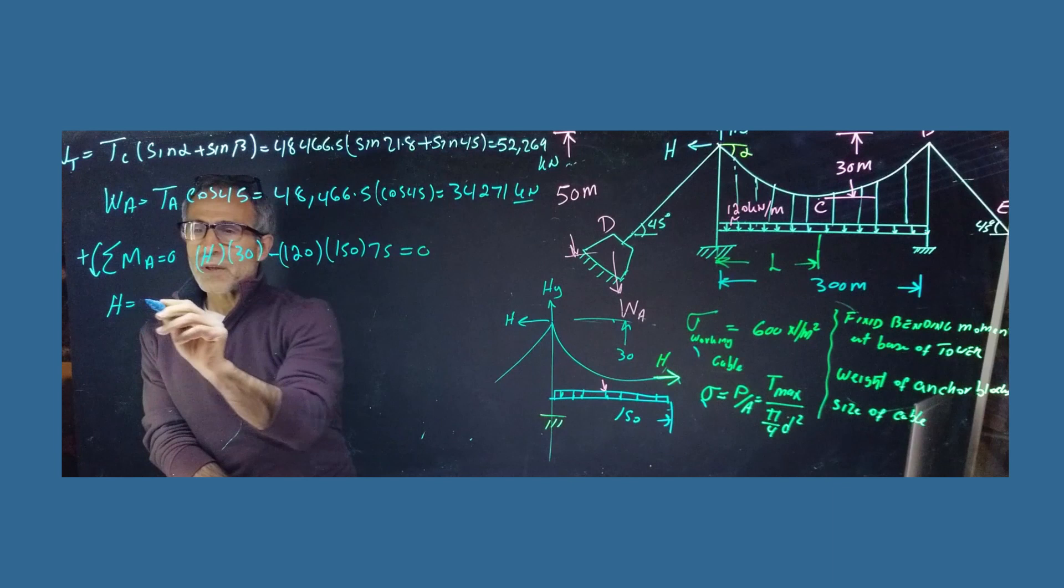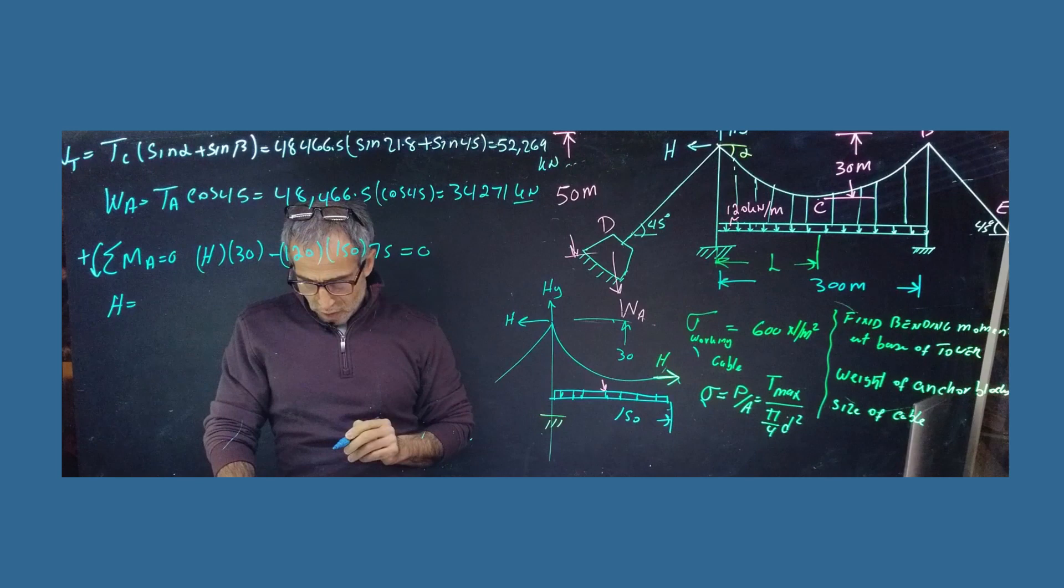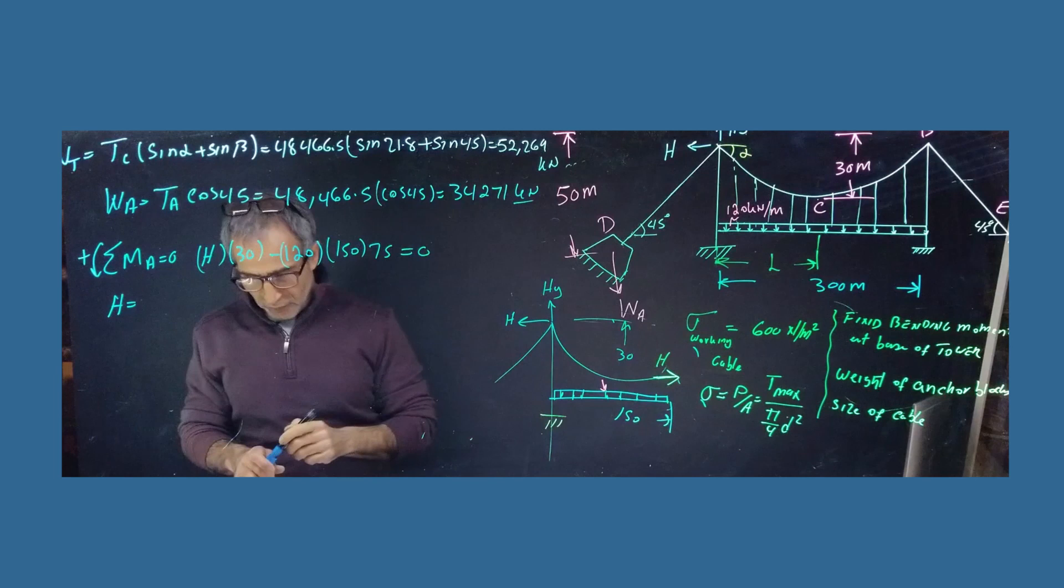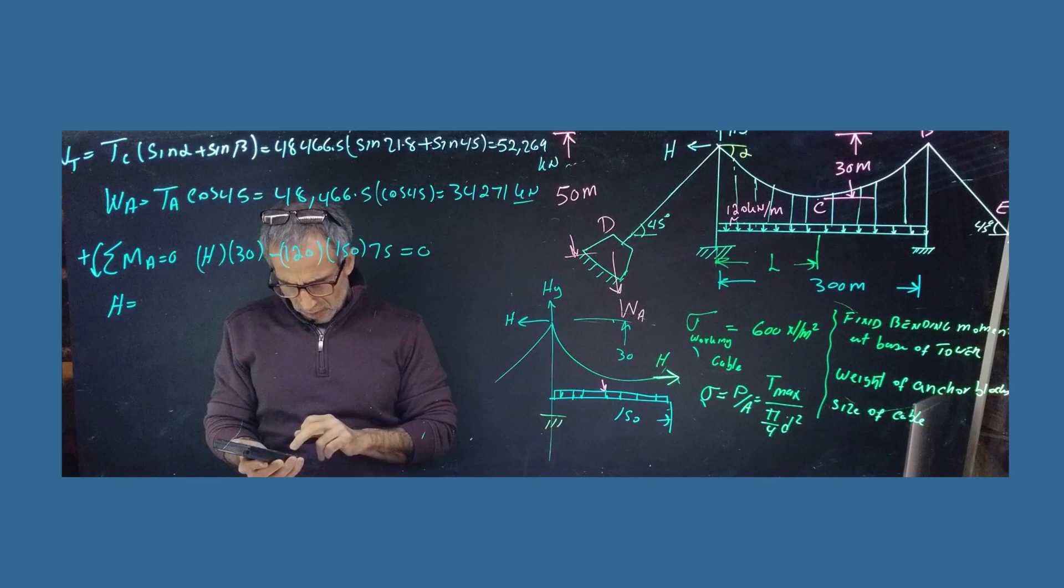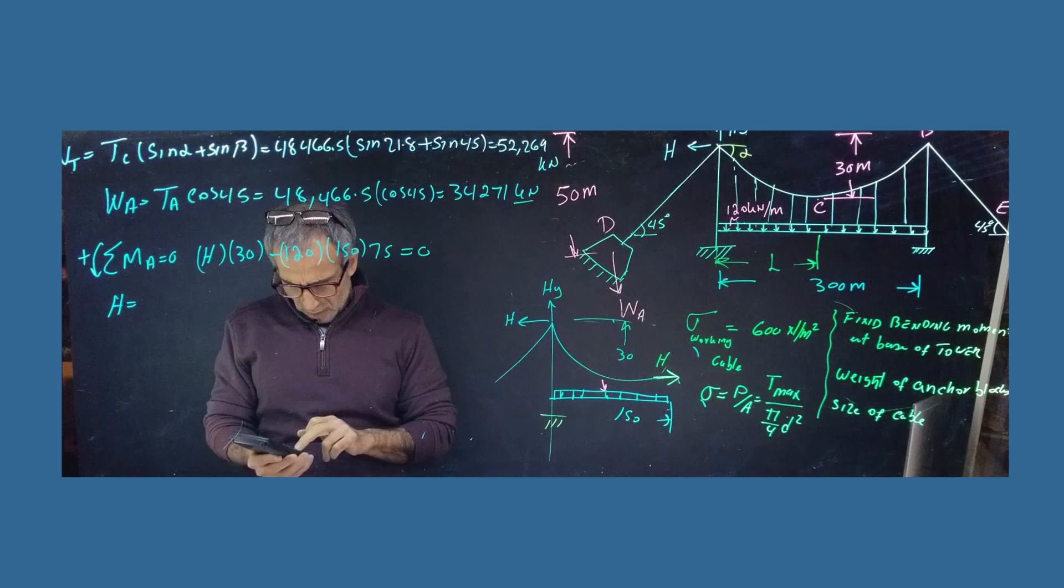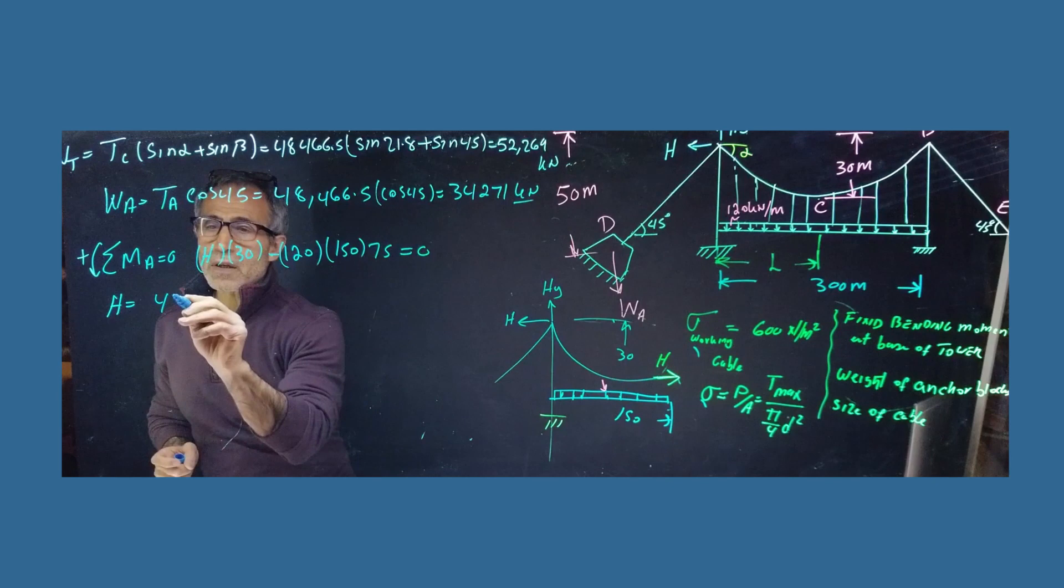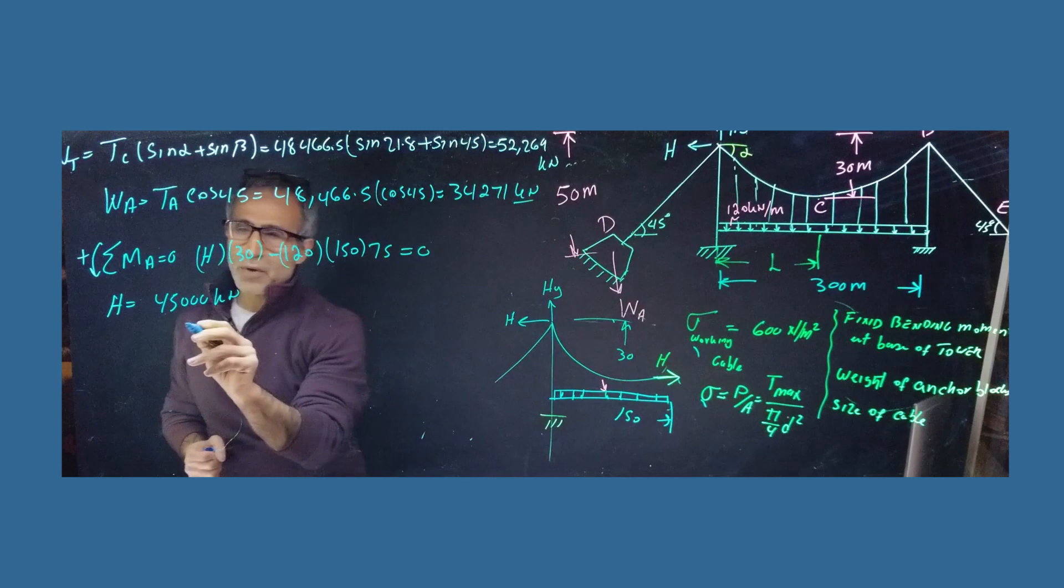which is going to be 120 times 50 times halfway. So, it's going to be minus 120 times 150. And this distance would be 75 is equal 0. So, my H is going to come out to, if you calculate that, your H is going to come out to, I believe, 45,000. Let me calculate that, I haven't done this. So, I got 120 times 150 times 75. Okay, divide it by 30. Yep. 45,000 kilonewton.